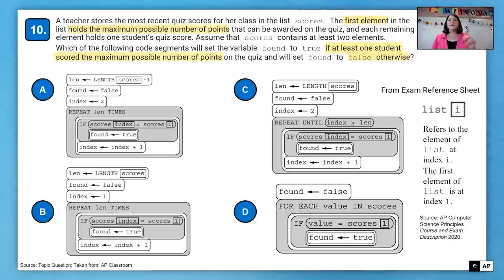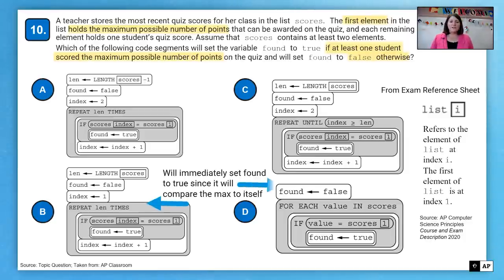Again, from the exam reference sheet, remember that list I refers to the list element at list index I. The first element in a list on the AP exam is at index 1. So you see here in our question in C and D, it will immediately set found to true since it will compare max to itself. So in both of these, it compares to itself. And so it will immediately say it's true because we are looking at it sets max and so it compares max to itself. Because remember, the first value in the list is the maximum.